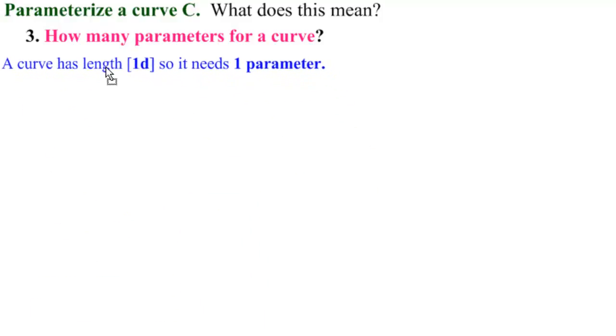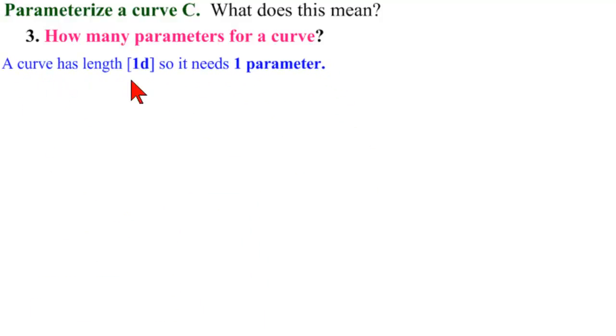The answer to this question is to do with measurement. A curve has length, which is a one-dimensional measurement, so it needs one parameter. We can go off positively or negatively, but only along its length, so it needs one parameter.